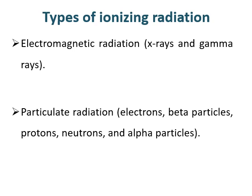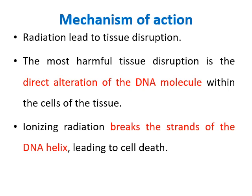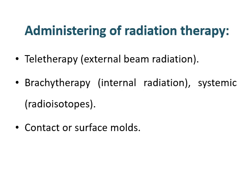Types of ionizing radiation include electromagnetic radiation (X-rays and gamma rays) and particulate radiation (electrons, beta particles, protons, neutrons, and alpha particles). The mechanism of action: radiation leads to tissue disruption — the most harmful disruption is direct alteration of the DNA molecule within cells. Ionizing radiation breaks the strands of DNA, leading to cell death. Administration of radiation therapy includes teletherapy (external beam radiation), brachytherapy (internal radiation), systemic radioisotopes, and contact or surface mold.